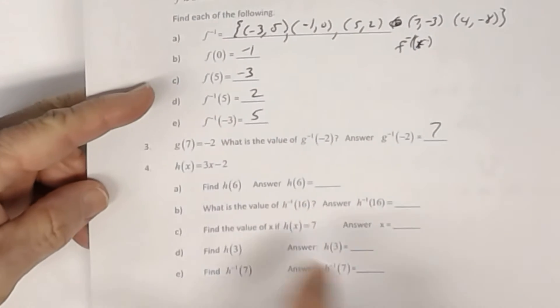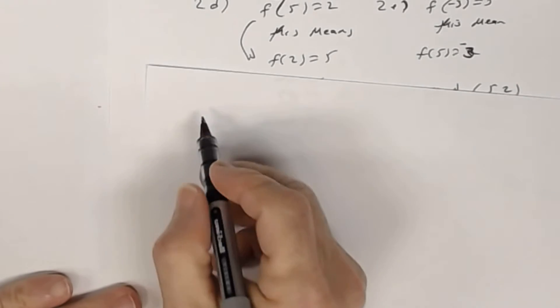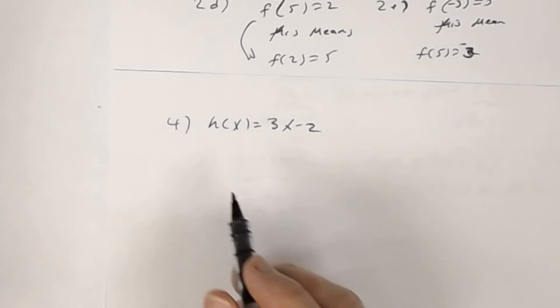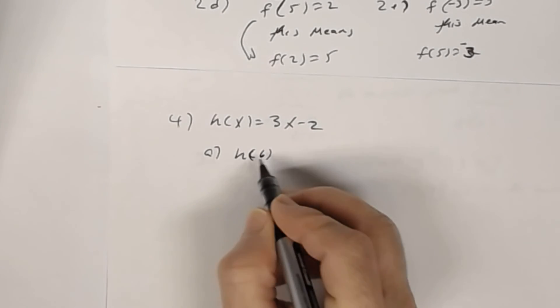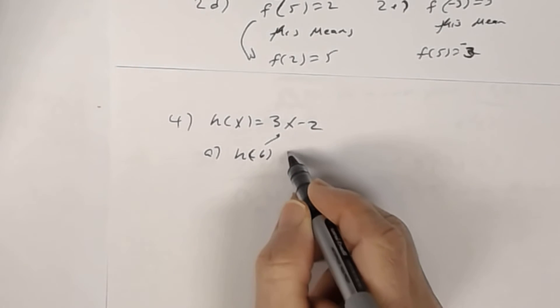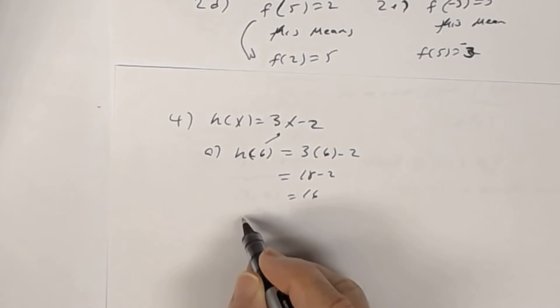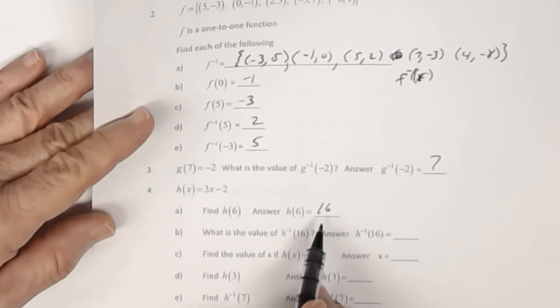In number 4, h(x) = 3x - 2. In letter a, find h(6). To find h(6), go to function h and substitute 6 for x: 3(6) - 2 = 18 - 2 = 16. So h(6) = 16. Almost all of you should have gotten 4a correct.